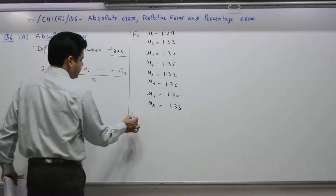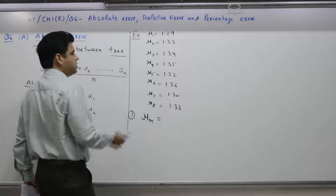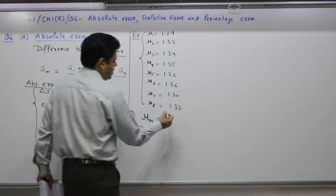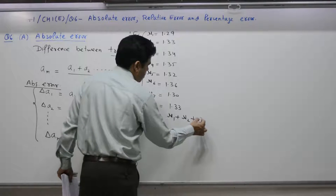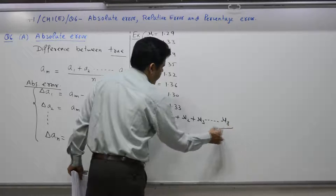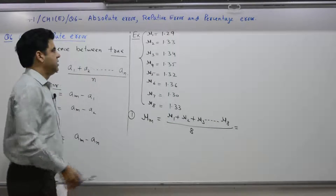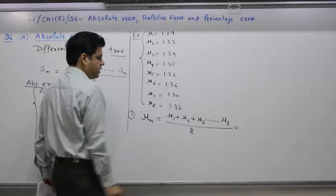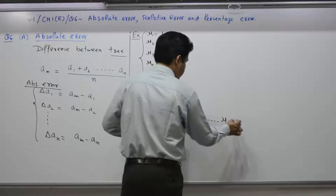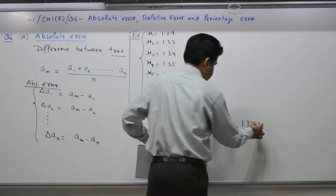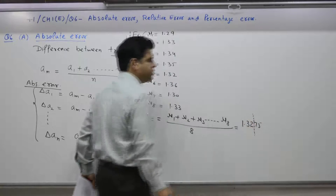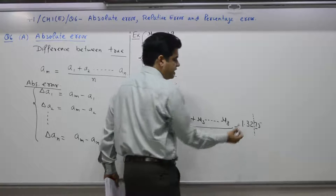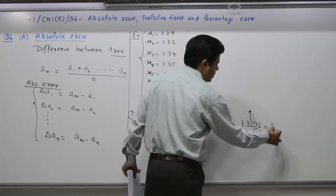Step 1: find the true value or mean value. There are 8 values given, so the true value is the mean of all: (n1 + n2 + n3 + ... + n8) / 8. That is 1.29 + 1.33 + 1.34 + 1.35 + 1.32 + 1.36 + 1.30 + 1.33, which gives 1.3275. Rounding off to two decimal places (since the digit 7 is more than 5), the mean value comes out to be 1.33.